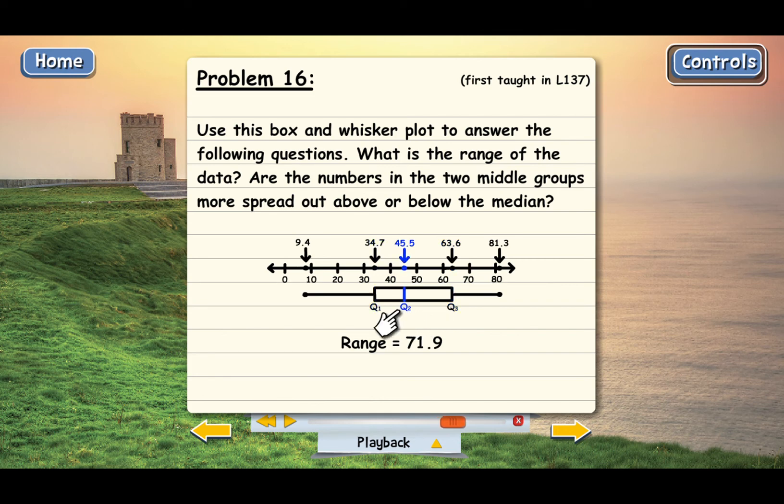And remember that Q2 is the median here, and each of these four groups has the same number of terms. Well, if there are the same number of terms in the third group that's more spread out than the second group...